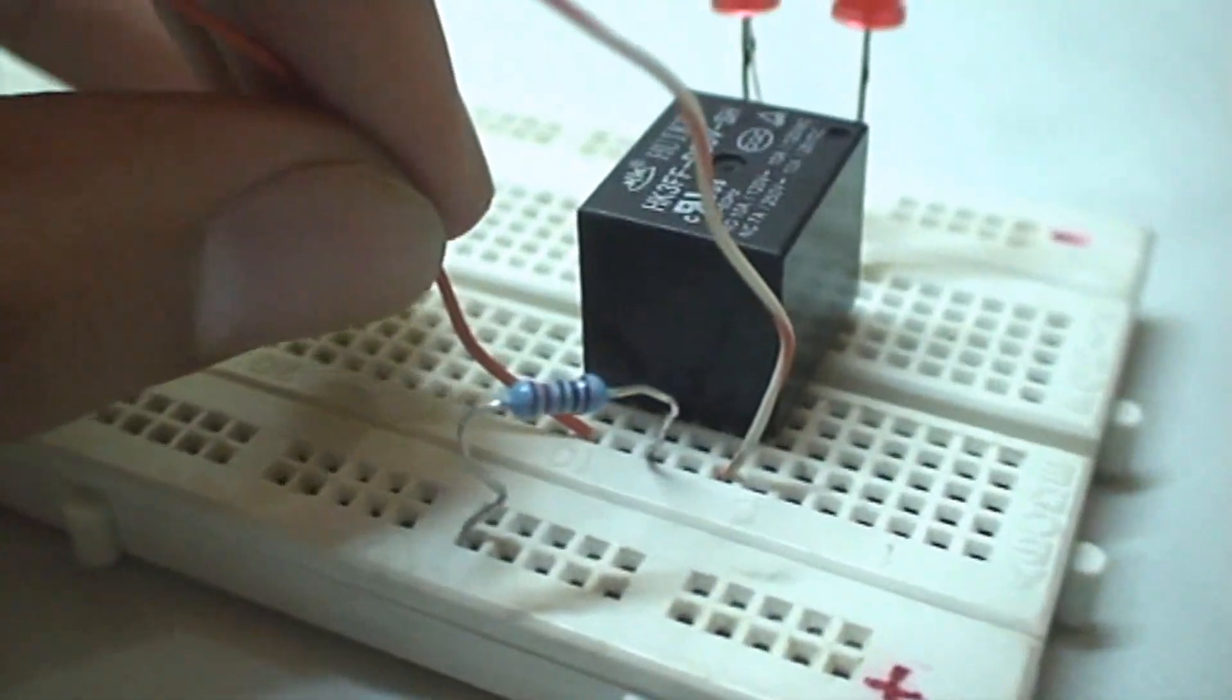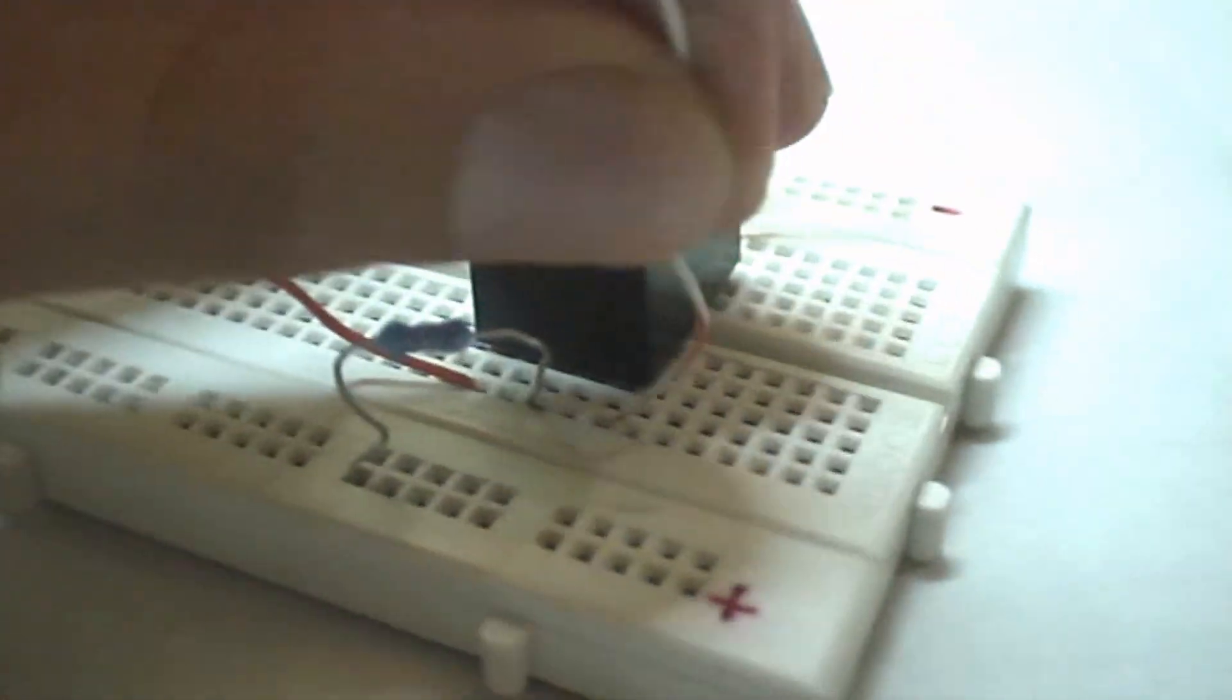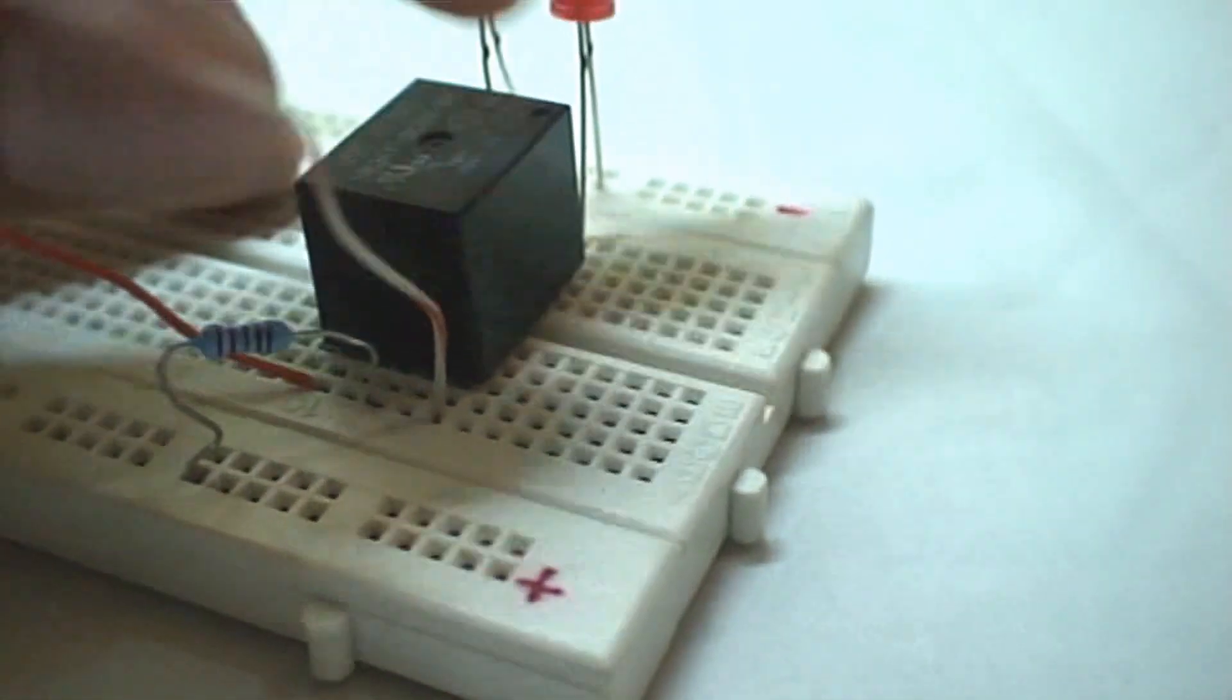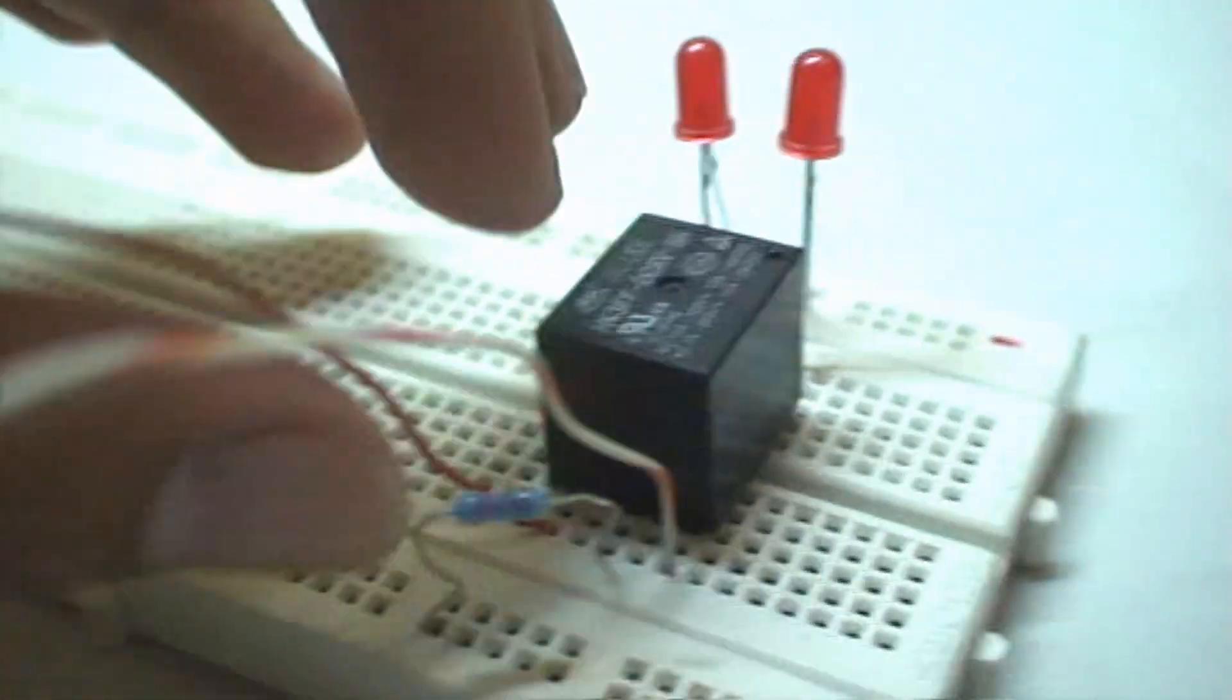Coil terminal one - this is the positive of the 6V power supply. This coil terminal is one and this is two. This is the positive and this is the negative.